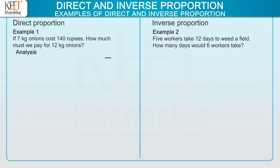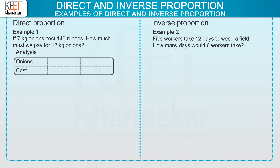Let us now analyze the first example. Here, 7 kg onions cost 140 rupees. So write 7 kg and 140 rupees in the table as shown on the screen. Here we are supposed to find the cost of 12 kg of onions, so write 12 kg and a question mark as shown on the screen.